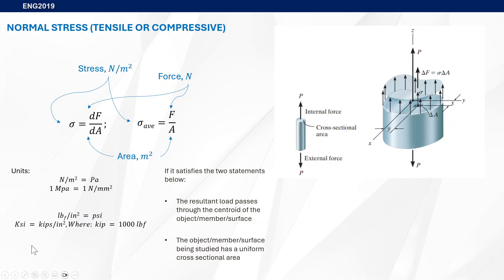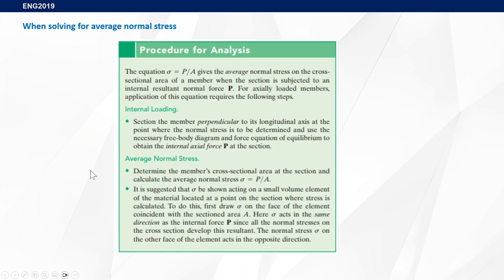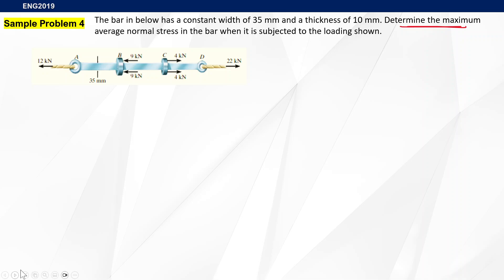Usually when we have a procedure for average normal stress, just like when finding internal loads, we establish our reactions, determine our internal loadings, and finally solve the average normal stress. Normally we're looking for the force that is aligned along the axis where the applied force is.